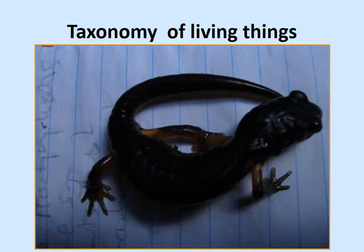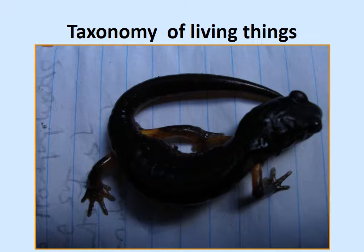Lecture 9 is about taxonomy, basically the way that we organize living things into groups that are like each other. Because of the amount of diversity on the planet, whether we're talking about living things or even soil, we have developed a method of naming things using two-part names and a system that organizes things into groups where there are similarities, so it helps us get a better handle on understanding life.